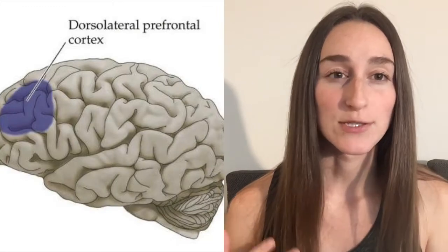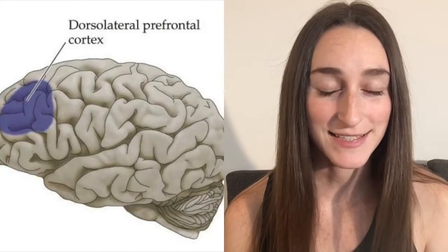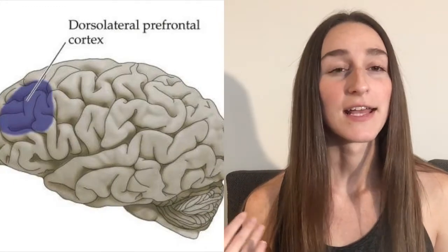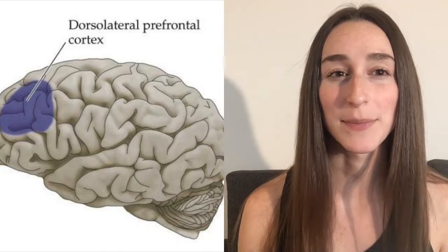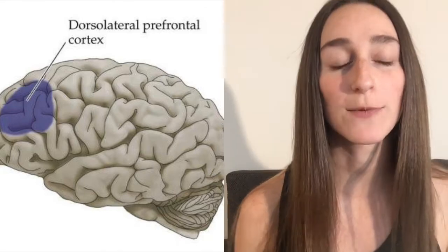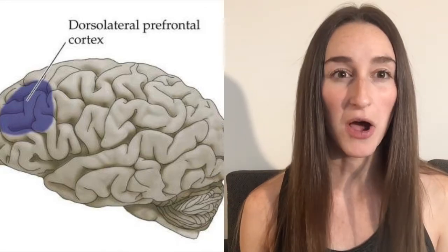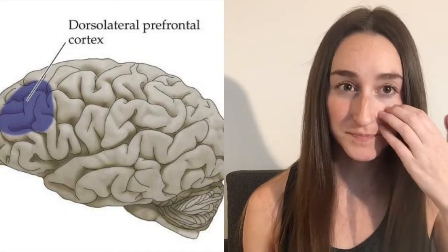The first area is the dorsolateral prefrontal cortex. This area is where we interpret things that happen in the world — it's where we decide how we're going to feel about something.